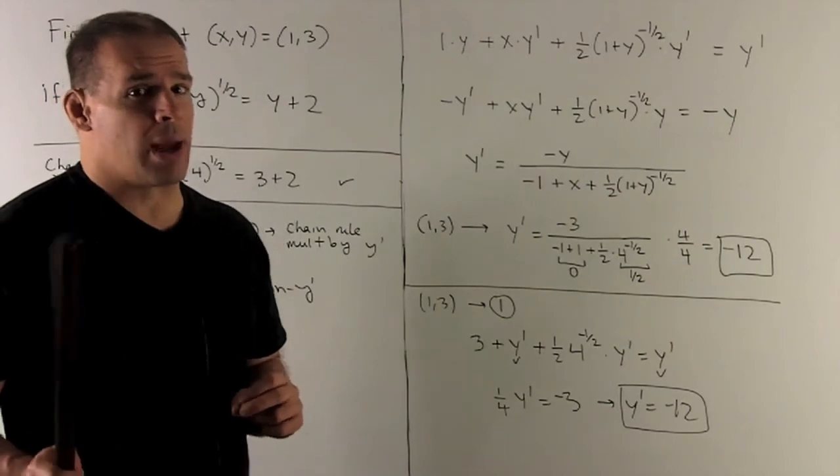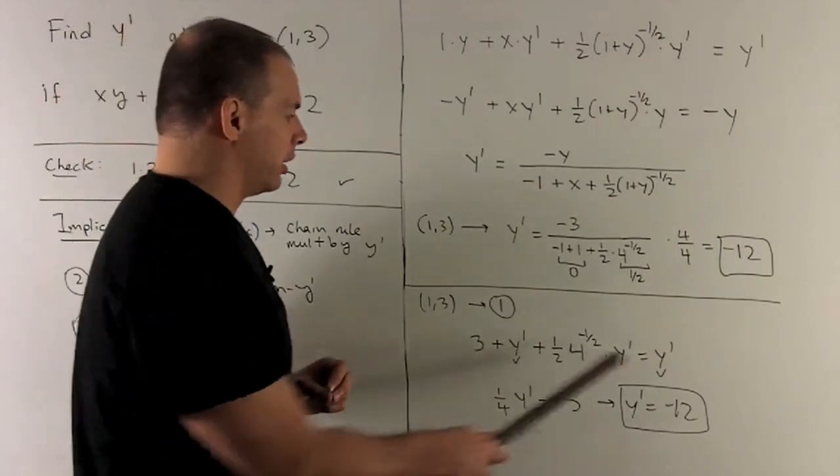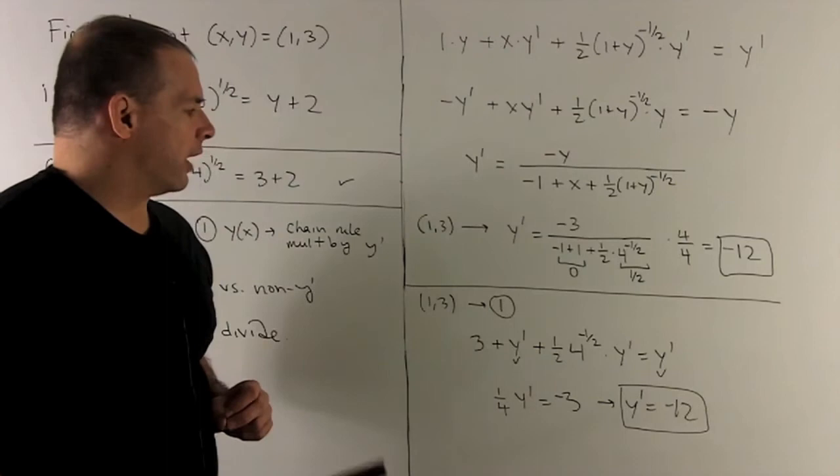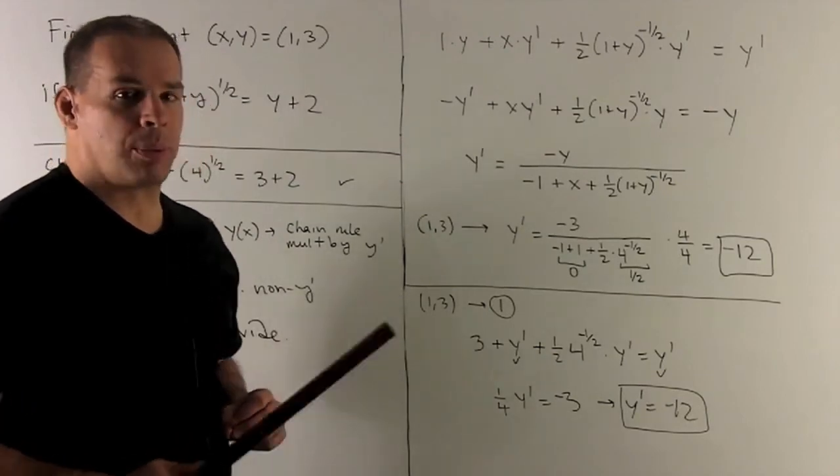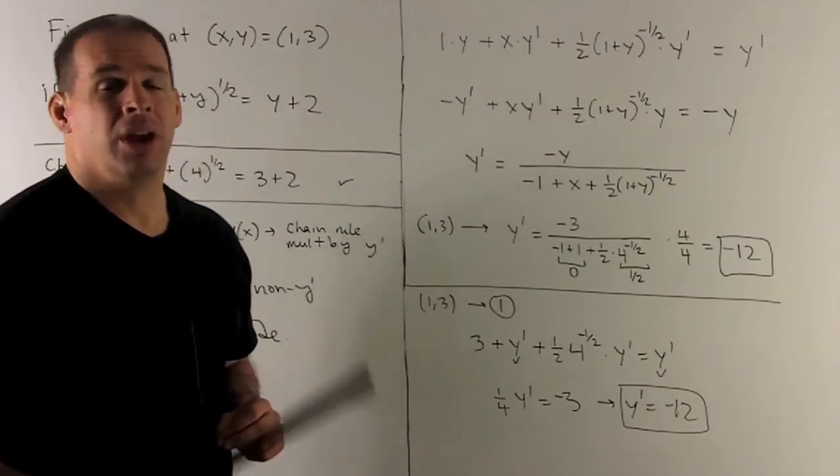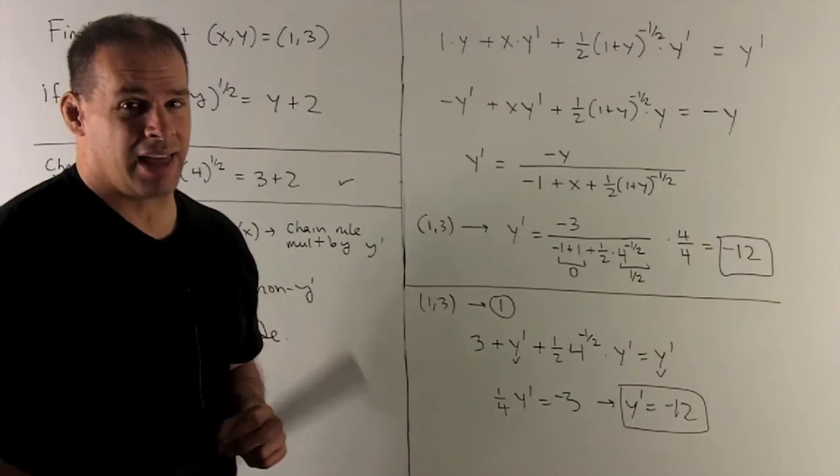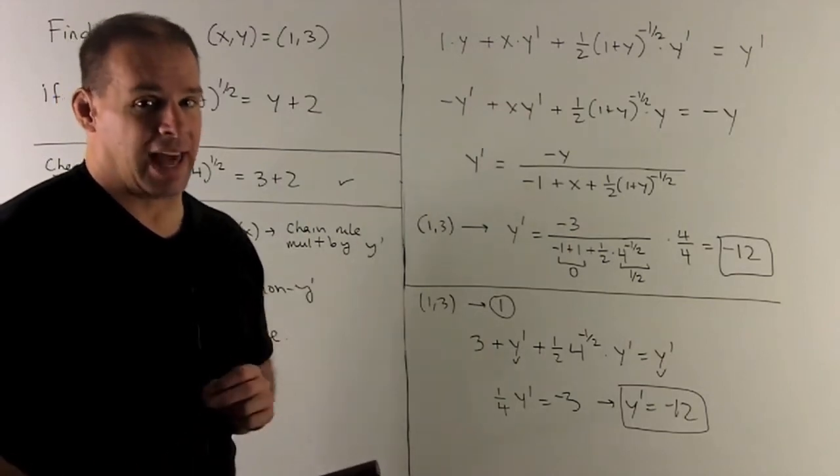Notice we have a y prime on each side, so I can just cancel them out here and here, which is just going to leave me with our one fourth y prime equal to minus three. Push the four to the other side, and that gives you your minus twelve again.